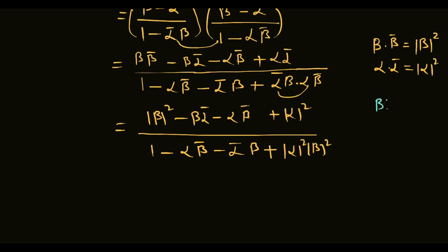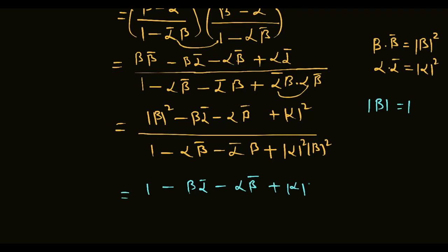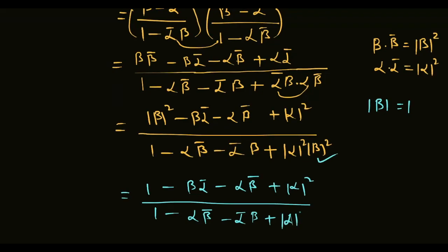Question में given है beta का modulus equal to 1, तो जहाँ-जहाँ modulus of beta है वहाँ 1 लगा देंगे। Numerator: 1 minus beta alpha conjugate minus alpha beta conjugate plus modulus of alpha square. Denominator: 1 minus alpha beta conjugate minus alpha conjugate beta plus modulus of alpha square. 1 square is 1, और numerator की सारी terms denominator की सारी terms से match कर रहे हैं, यह cancel हो जाएगा पूरा।